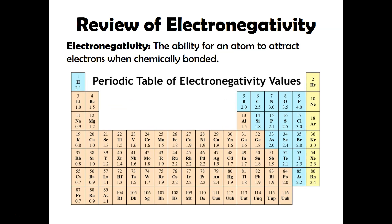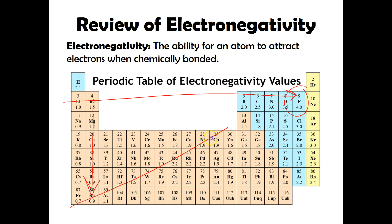This is a periodic table of different electronegativities for all these different elements. As you go from left to right you can see that the electronegativity is going to increase, with fluorine having the highest electronegativity value. And if you go down a group you can see electronegativity decreases. So basically elements in the upper right hand corner are going to have the highest electronegativity value.